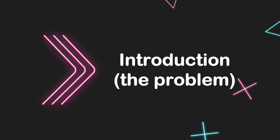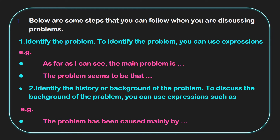In the introduction, you are introducing the problem. Usually in the introduction, you're talking about the problem and trying to tell me what the problem seems to be. Here are some steps you can follow when discussing a problem. First of all, you need to identify the problem. To identify the problem, you can use expressions such as: 'as far as I can see,' 'the main problem is,' or 'the problem seems to be that,' and then you move on with mentioning the problem.